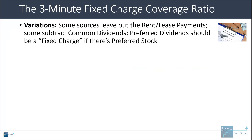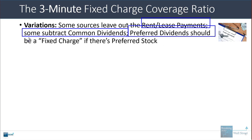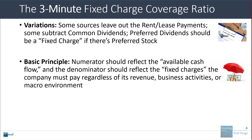There are plenty of variations. Some people will completely ignore the rental or lease payments. Some will argue you should subtract common dividends in a standalone company context. If there are preferred dividends because the company has preferred stock, those should also be counted as part of the fixed charges in the denominator. The basic principle is that the numerator should always reflect available cash flow and the denominator should always reflect the fixed charges the company must pay regardless of its revenue, business activities, or the macro environment.